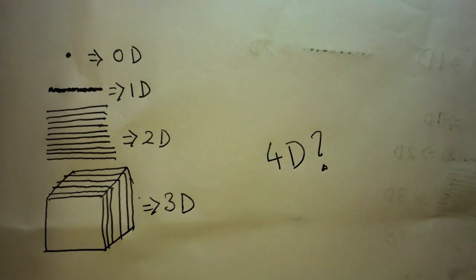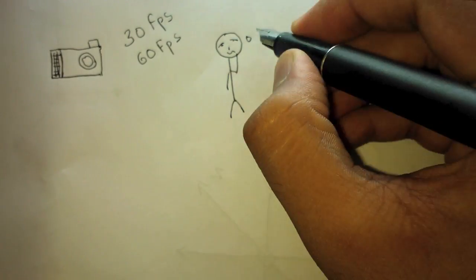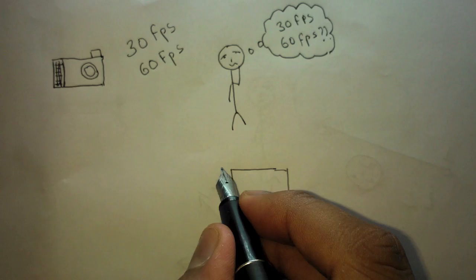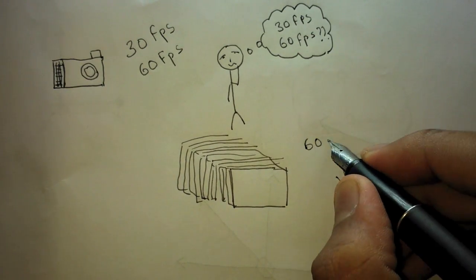So now what is four dimensional? Have you ever purchased a camera which takes videos at 30 or 60 fps? Here fps means frames per second. 60 frames per second means that the camera takes 60 photos in one second. By playing these photos continuously, we get a video.